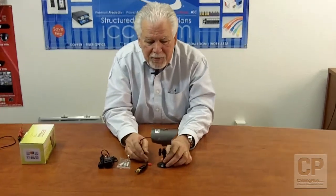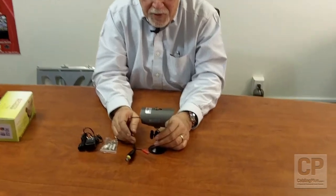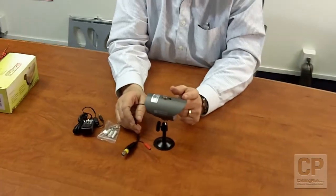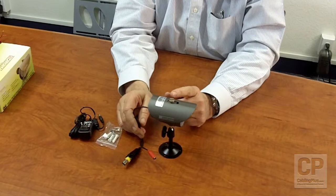What's nice about this particular camera is it comes with several features I think you'll find very interesting. First of all, it has a built-in sun shield, which allows you to use the camera indoors or outdoors.